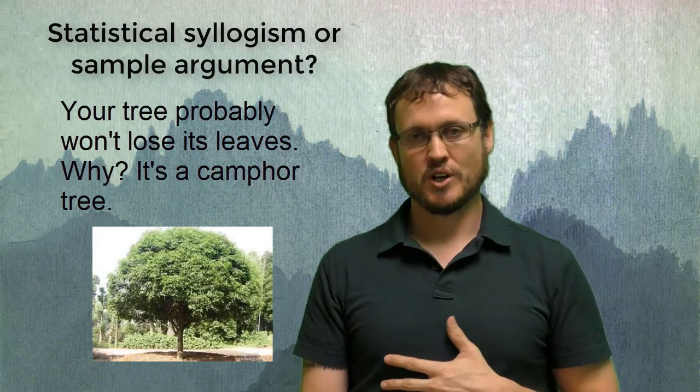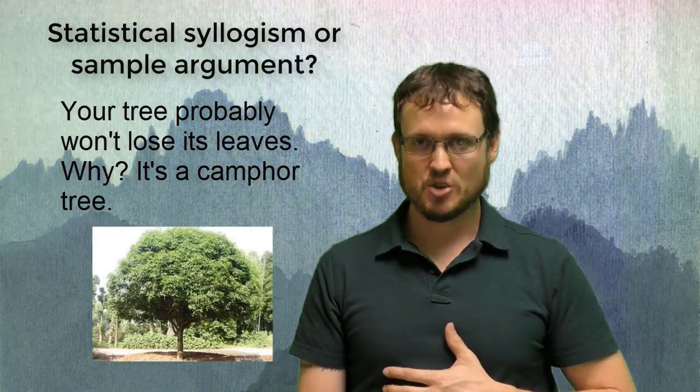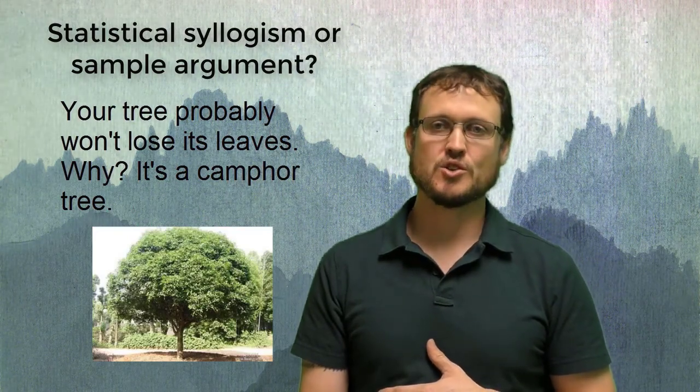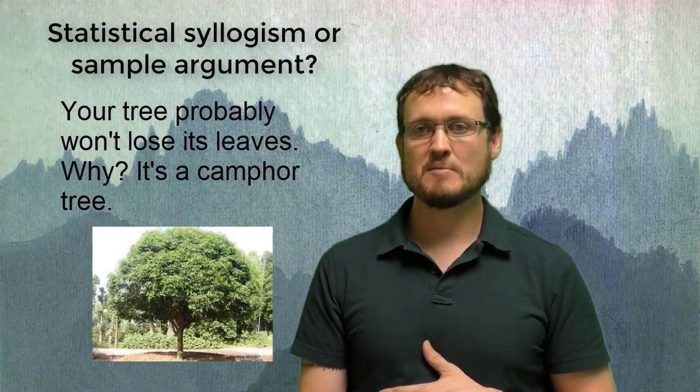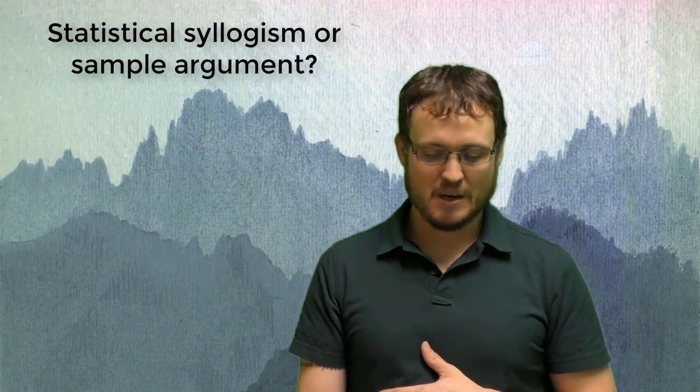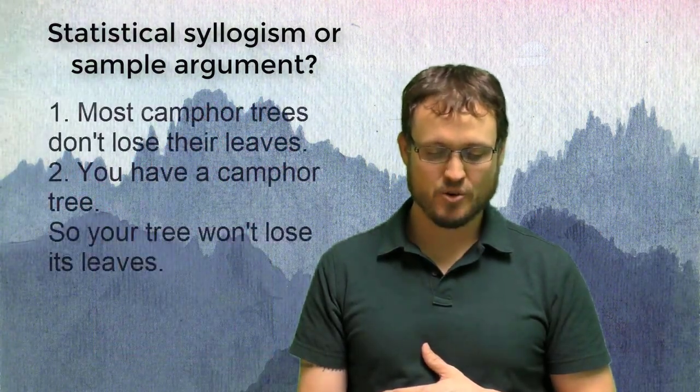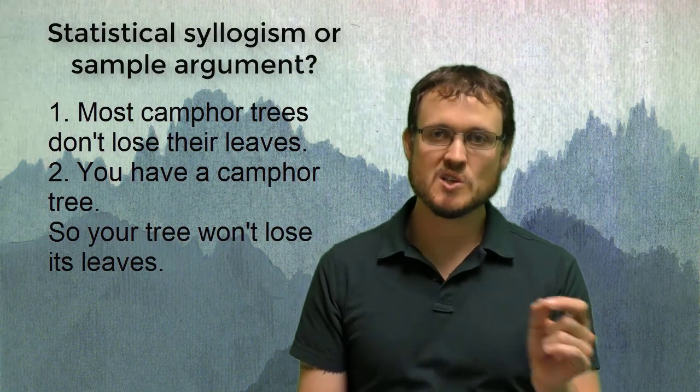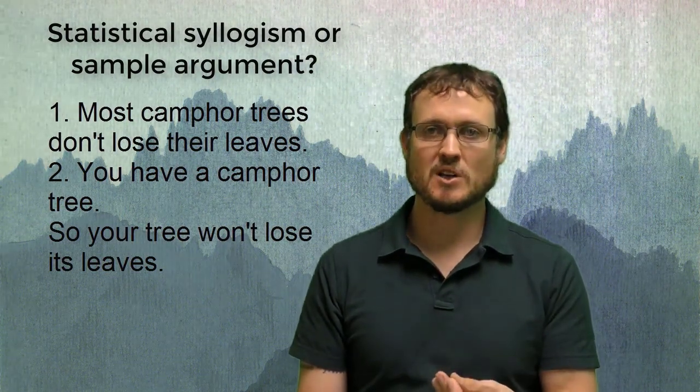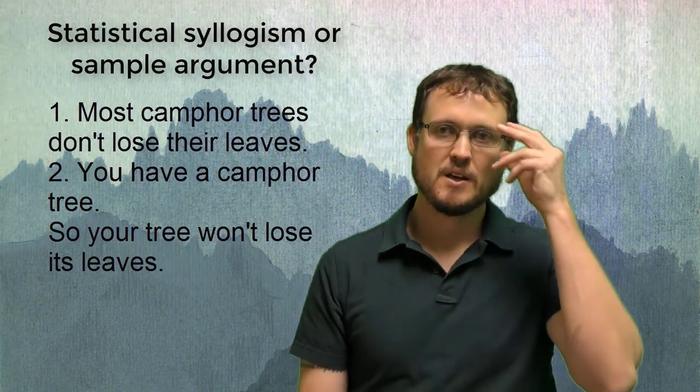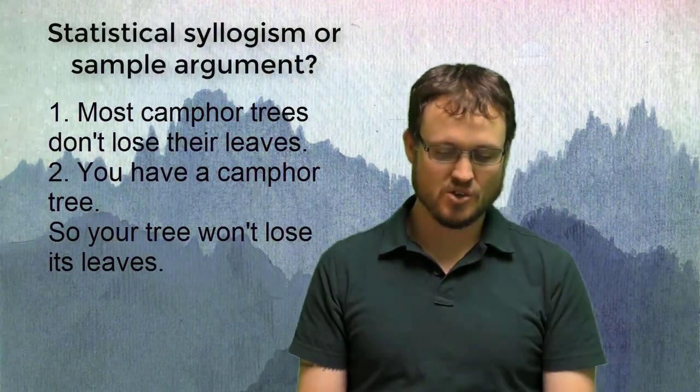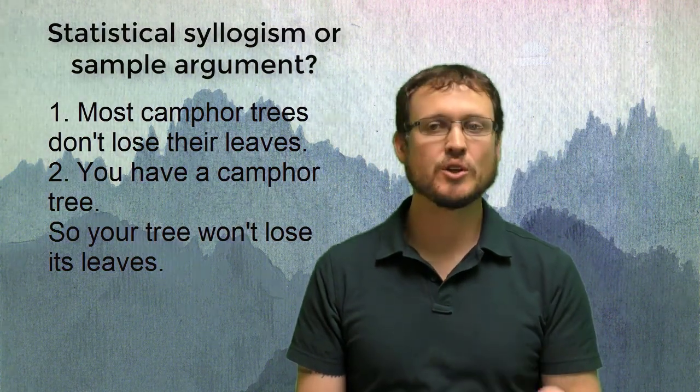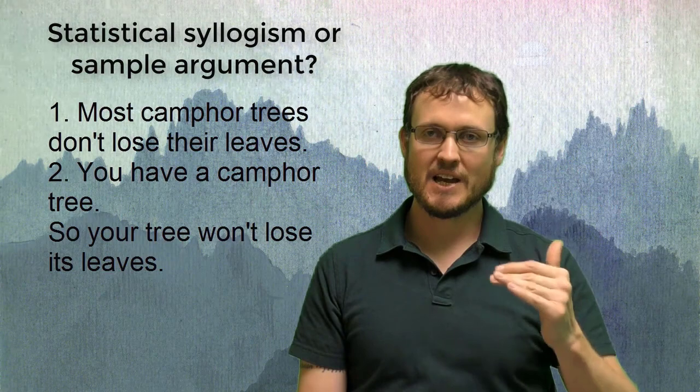Now this one's also tricky, because you have to draw from your previous knowledge from chapter 1 and 2 about unstated premises and conclusions. And this particular argument has an unstated premise. And that premise is that most camphor trees do not lose their leaves. So you can see that that's a logical assumption. Remember, an unstated premise can often be seen as an assumption of the speaker. The speaker is assuming that relationship, that camphor trees don't lose their leaves. He doesn't state it outright, but it's clearly part of their logic.